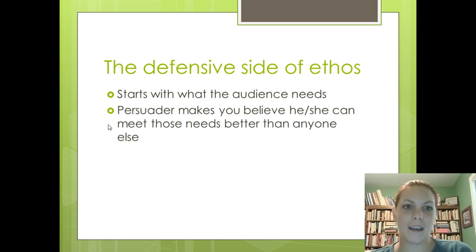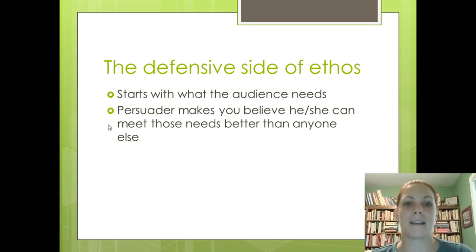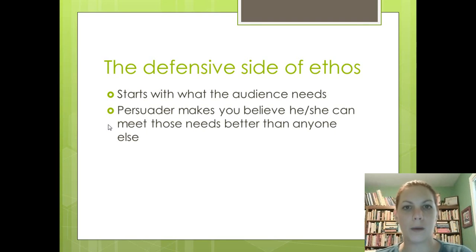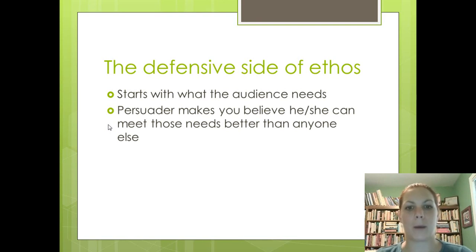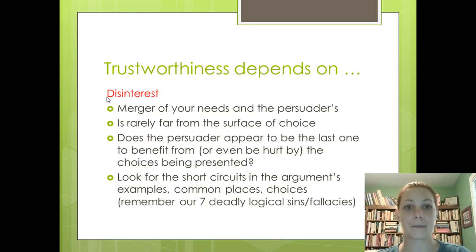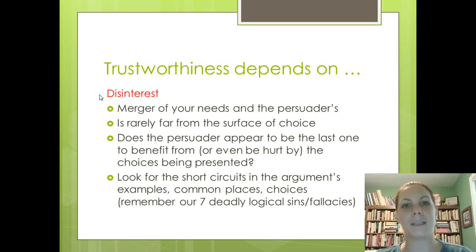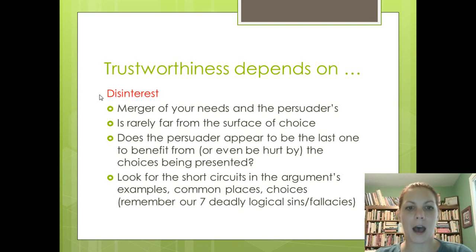Now on to this week's content. This week we are going to be discussing the defensive side of ethos, which of course always starts with your audience's needs. What do they value? What do they desire? A good persuader makes you believe that he or she can meet those needs better than anyone else. This is, of course, all based — as the wonderful philosopher Billy Joel said — on a matter of trust. How do you display your trustworthiness? The first component to trustworthiness, as we've discussed before, is disinterest. This is the merger of your needs and the persuader's.